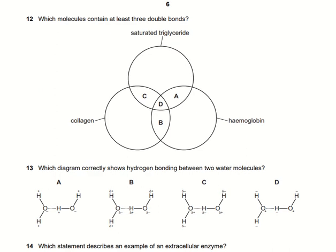Which molecule contains at least three double bonds? Looking at saturated triglycerides, collagen, and hemoglobin, we find that all three have at least three double bonds — they can have more than three, but they have at least three. So option D is the right answer.